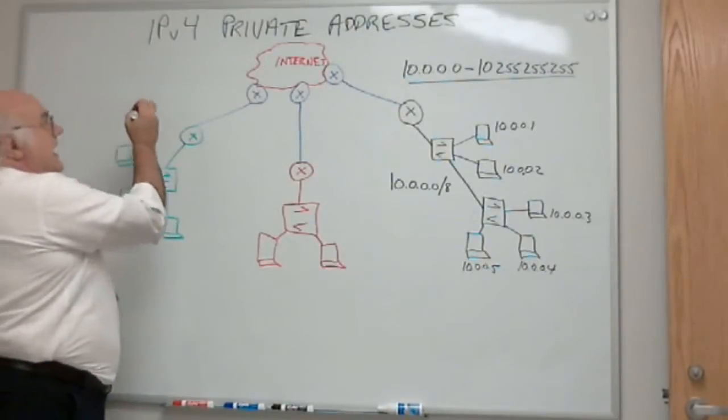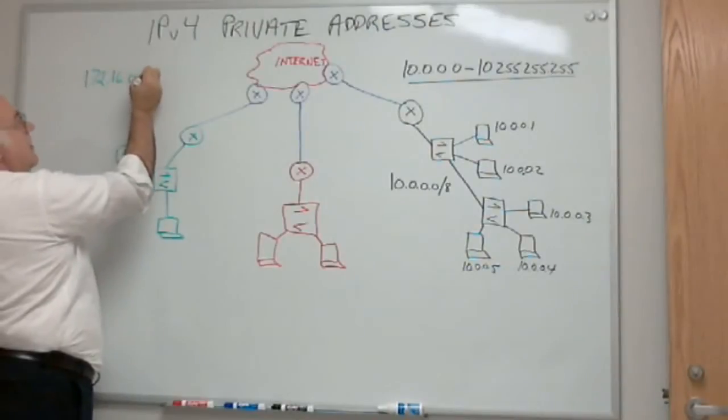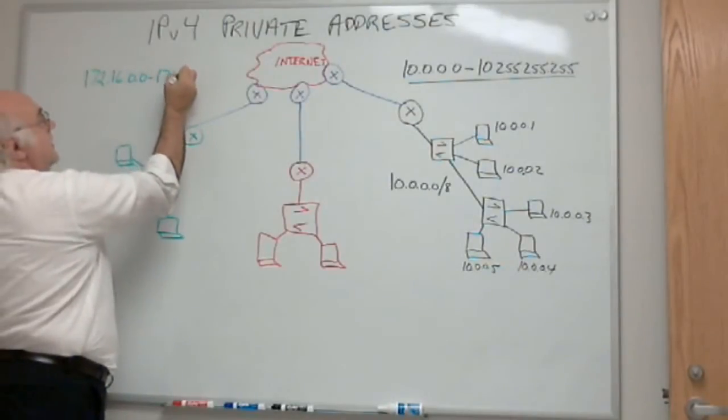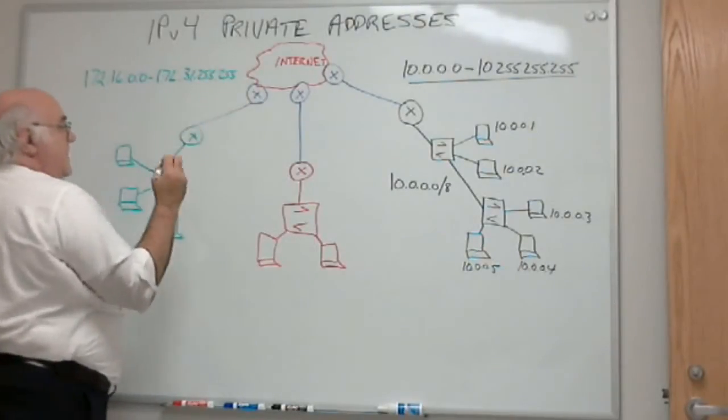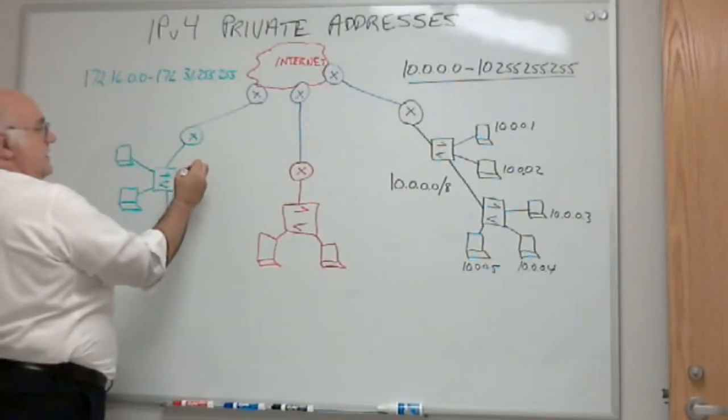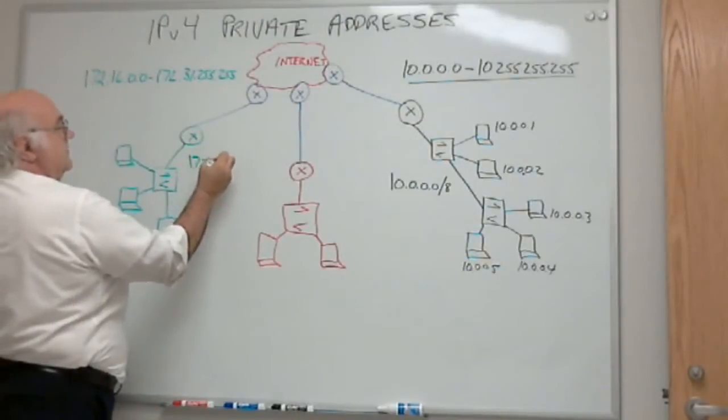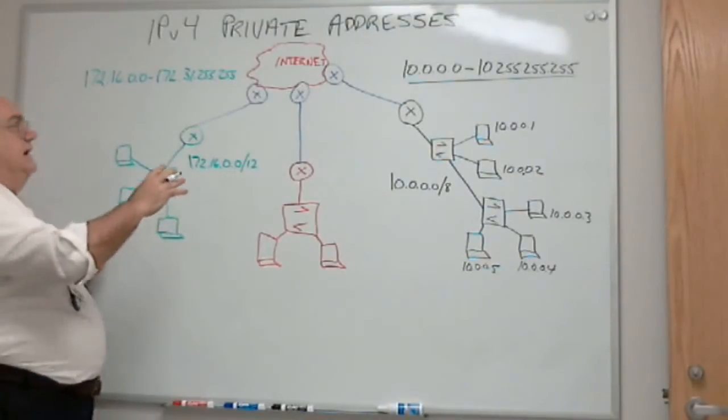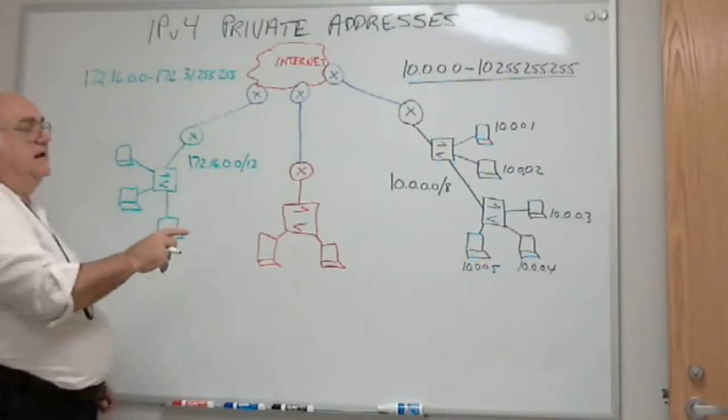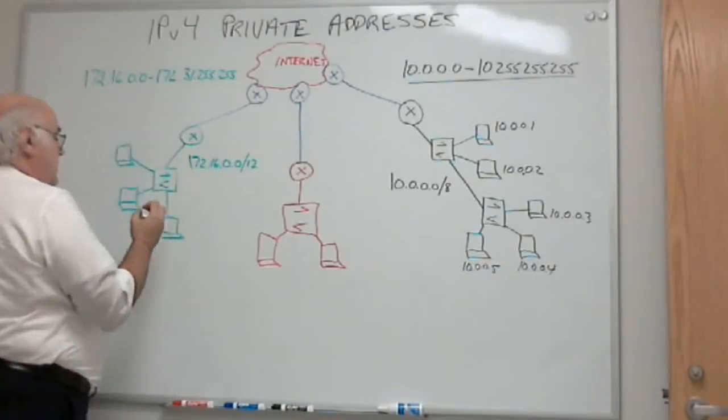So this guy, though, he decides he's going to use an address block that goes from this set, 172.16.0.0 through 172.31.255.255. That can be written as this block of addresses, 172.16.0.0 slash 12. Okay, again, you need to go back and verify that this is actually represented by all these addresses.